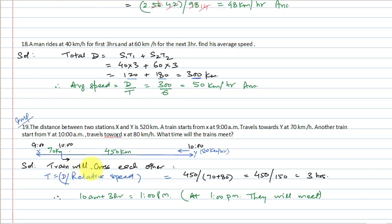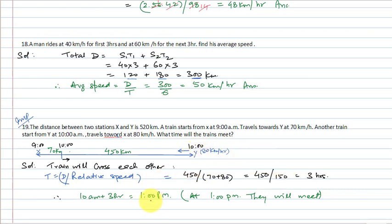Time for trains to meet = remaining distance / relative speed. Since they travel in opposite directions, relative speed = 70 + 80 = 150 km per hour. Time = 450/150 = 3 hours. So 3 hours after 10 AM, the trains meet — that means they meet at 1 PM.